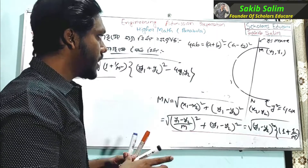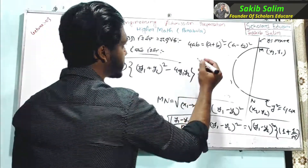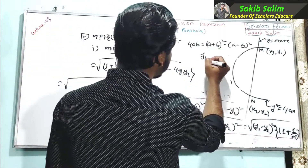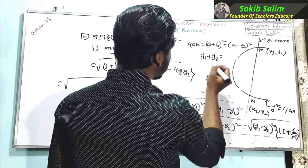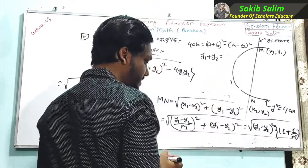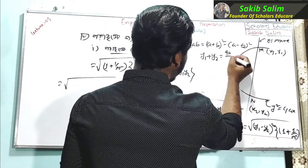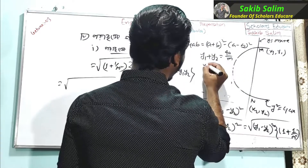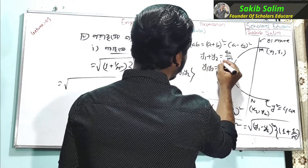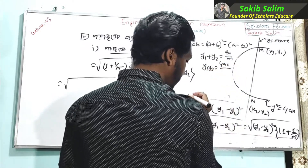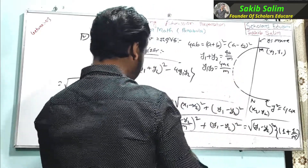So this is the result: y1 plus y2 to the power square minus 4 y1 y2. So, y1 plus y2 squared minus 4ac divided by m.